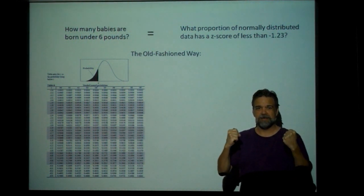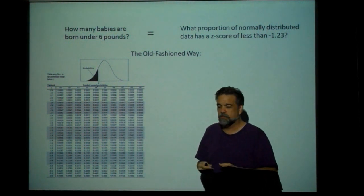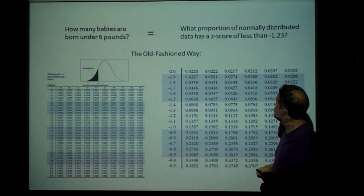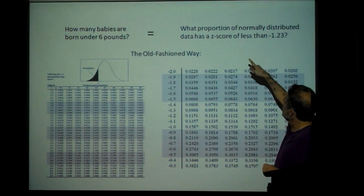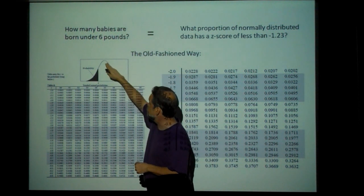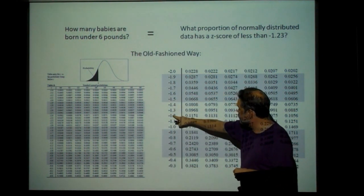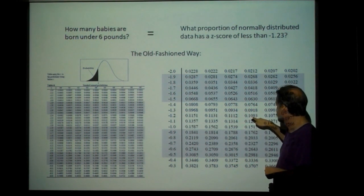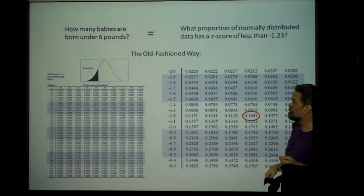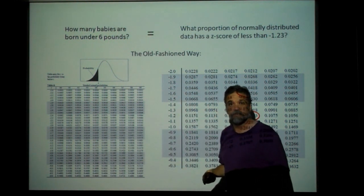There are two ways to calculate this — the old-fashioned way and the new-fangled way. The old-fashioned way uses a table: Table A, a table of standard normal probabilities. I look up negative 1.2 and go to column 0.03. The answer is 0.1093, so about 11%. That tells me that about 11% of babies are born under 6 pounds.